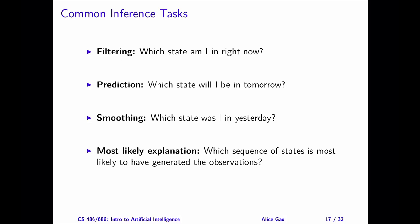Filtering cares about what's happening today. Given the observations until today, what is the probability that I am in a particular state today?